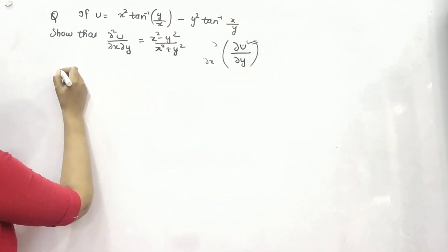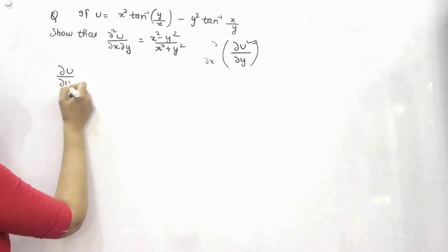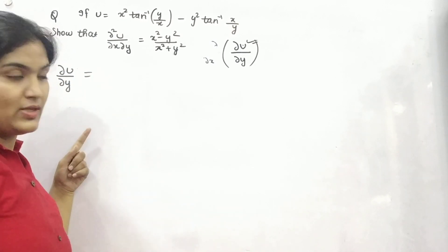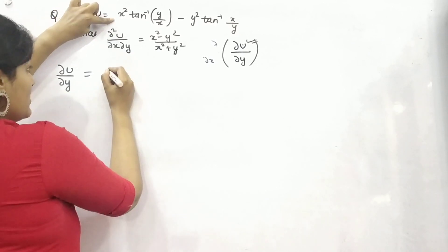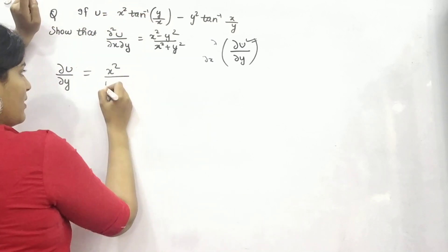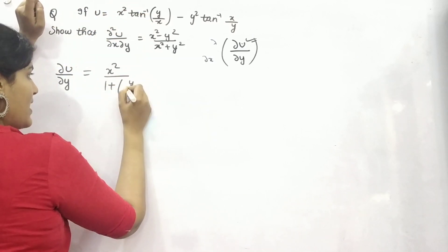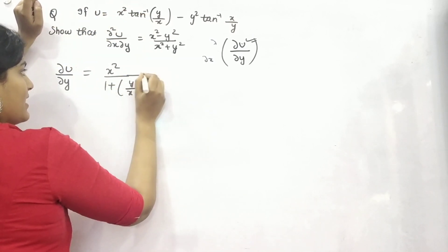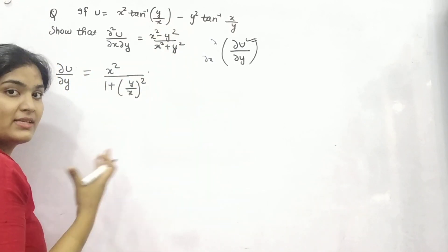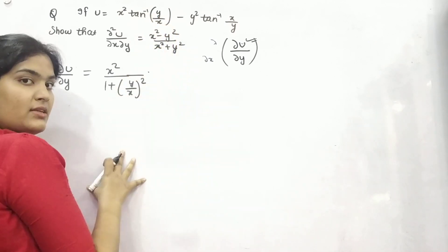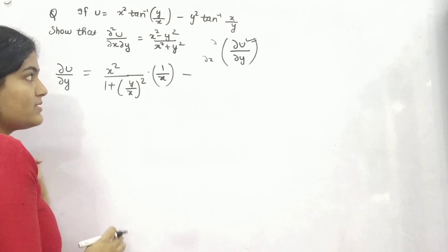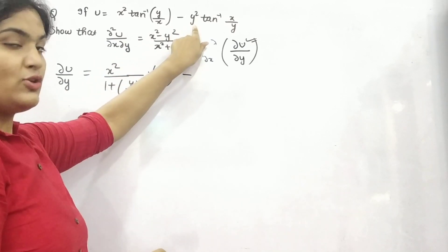First, find ∂u/∂y — keeping x constant. So x² stays as is. The differentiation of tan⁻¹(θ) is 1/(1 + θ²), then by chain rule, since θ = y/x, the differentiation of y/x with respect to y is 1/x.